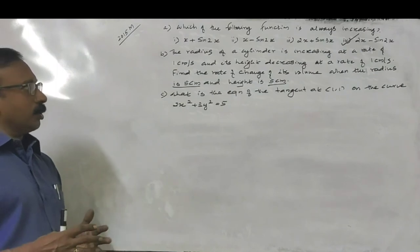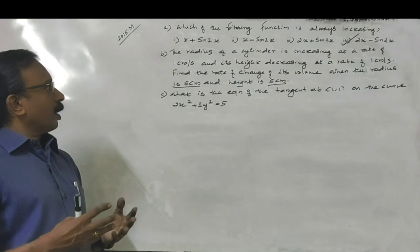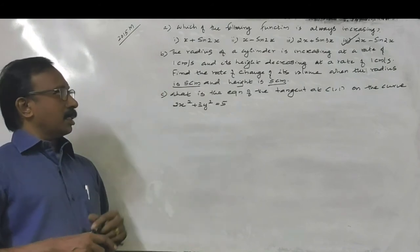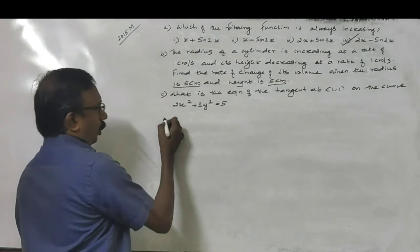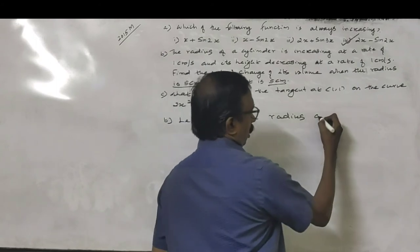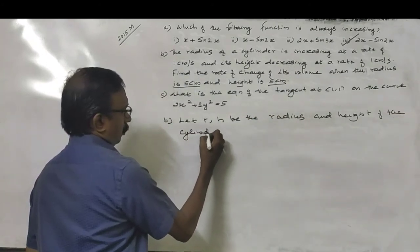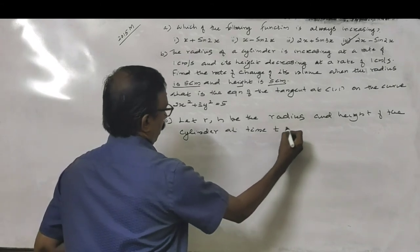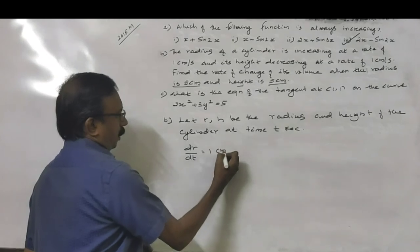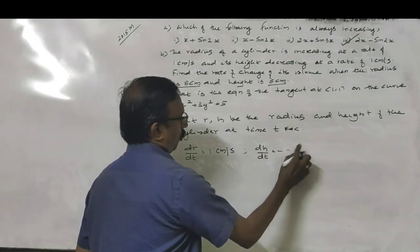The next question is: when the radius of a cylinder is increasing at the rate of 1 cm per second and height is decreasing at the rate of 1 cm per second, find the rate at which the volume of the cylinder is increasing or decreasing when the radius is 5 cm and height is 5 cm. Let r and h be the radius and height. dr/dt equals 1 cm/s, dh/dt equals minus 1 cm/s.